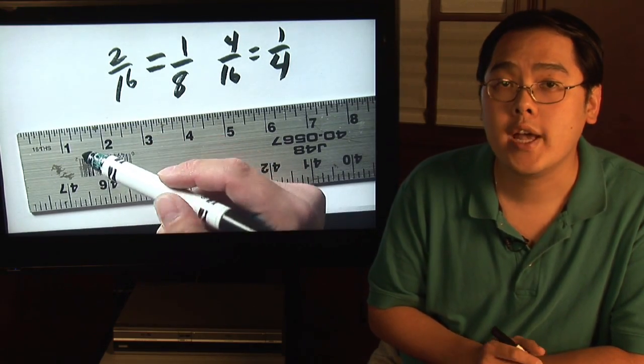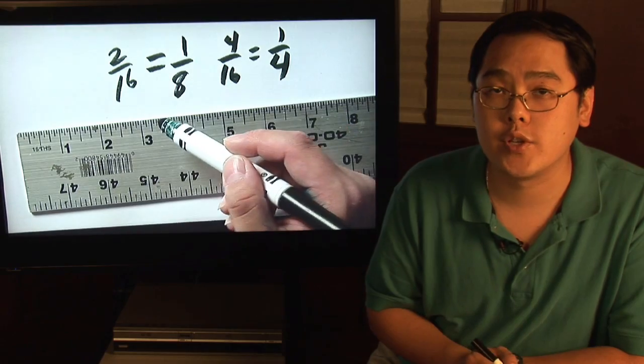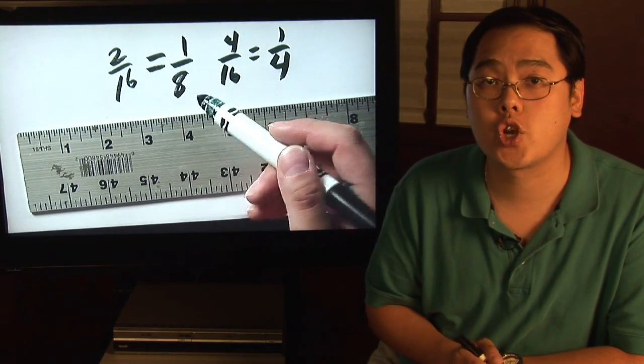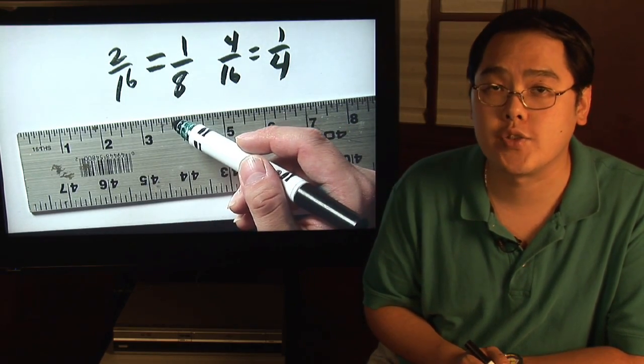But you basically just follow the pattern and for each fraction, see if you can reduce. If you can, great. If not, then just go on to the next measurement and continue counting from there.